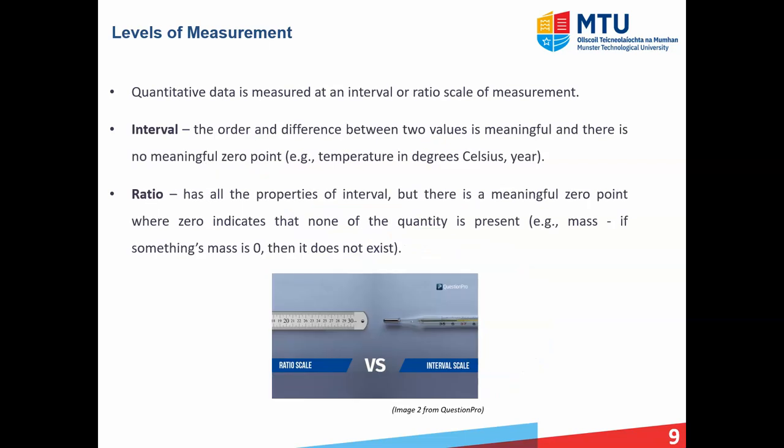Quantity of data then can be measured with an interval or ratio scale of measurement. So firstly, interval, the order and difference between two values is meaningful. So if we have two numbers, we can talk about the difference between them and there's an order to them. And there is no meaningful zero point. And this is important because this is the big difference between interval and ratio.